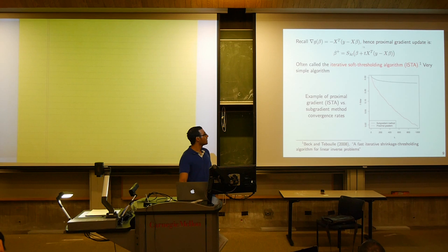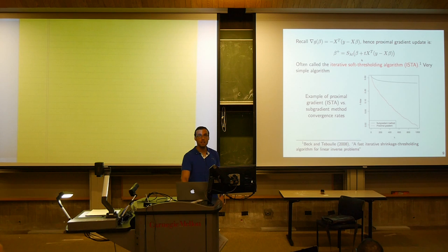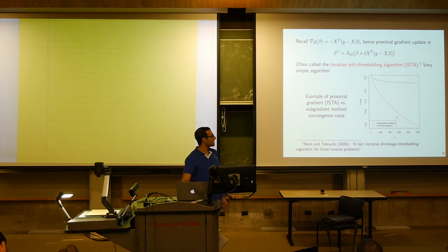It's perfectly fair to compare this to the subgradient method for the lasso because each iteration costs the same computationally. The soft thresholding operator is very cheap to apply. An important point is that, given that we've leveled them, proximal gradient converges much faster — a much faster convergence rate compared to the subgradient method.